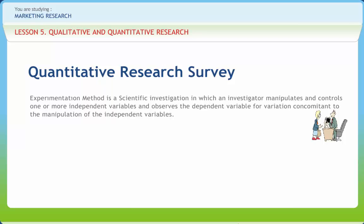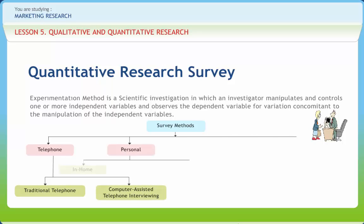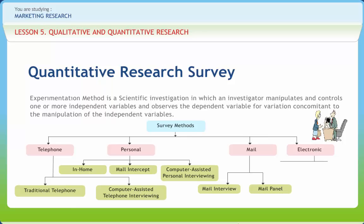Experimental research, also called experimentation, is a research process in which one or more variables are manipulated under conditions that permit data collection showing the effects of such variables. The survey technique involves the collection of primary data about subjects, usually by selecting a representative sample of the population under study. Surveys are often conducted because they are the only way to get the needed information. Telephone surveys allow for random sampling, enabling extrapolation of characteristics from the sample to the population. Depending on the method of administration, there are sampling frame considerations such as who can be reached by fax or internet, or whether there is sample bias.